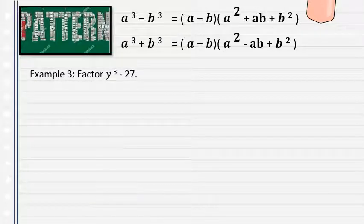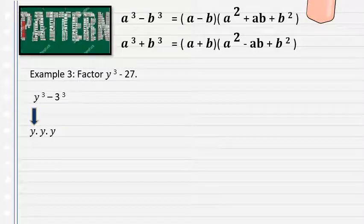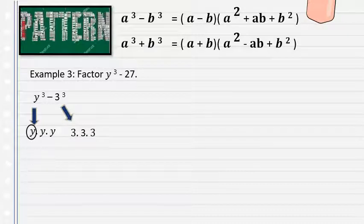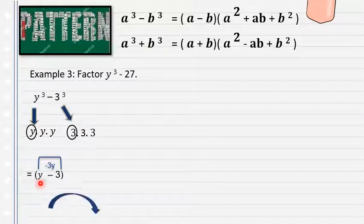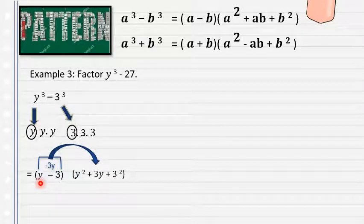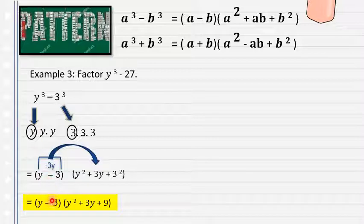Example 1: y cubed plus 1. y cubed = y times y times y; 1 = 1 times 1 times 1. The single values are y and 1, giving (y plus 1). Middle term: y times 1 = y. First term: y squared. Last term: 1 squared. The factored form is (y plus 1)(y squared minus y plus 1). Example 2: x cubed minus 27. Rewrite as x cubed minus 3 cubed. The single values are x and 3, giving (x minus 3). The answer is (x minus 3)(x squared plus 3x plus 9).